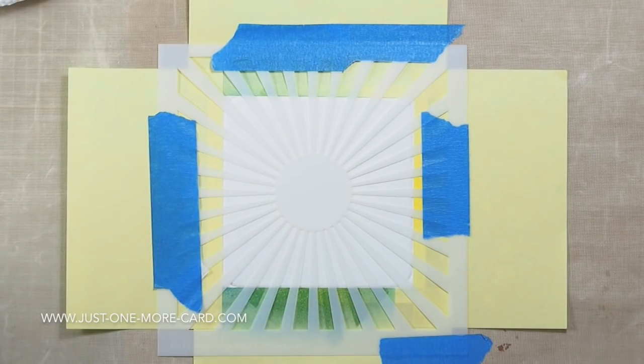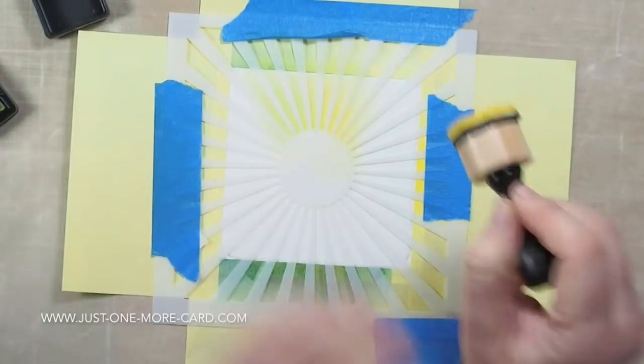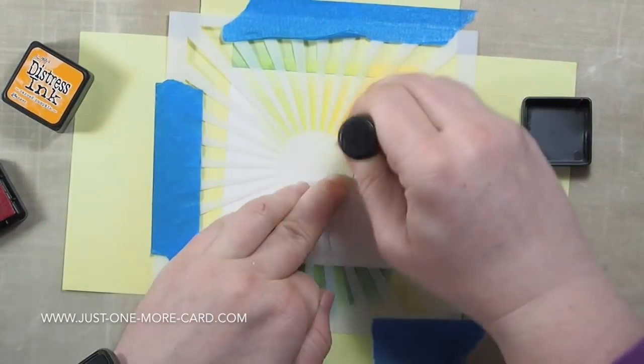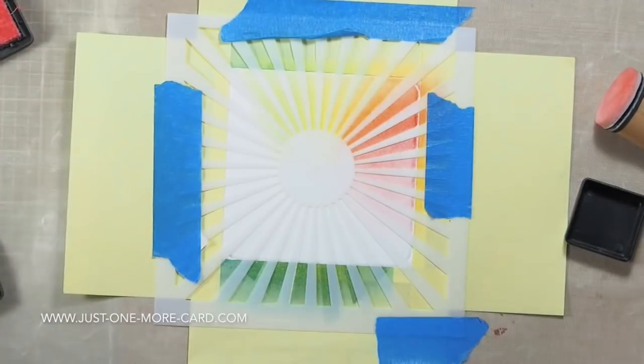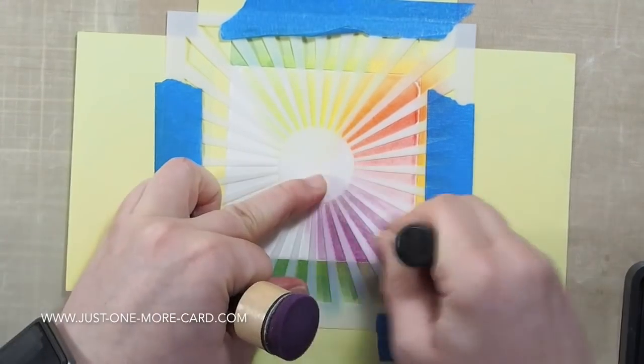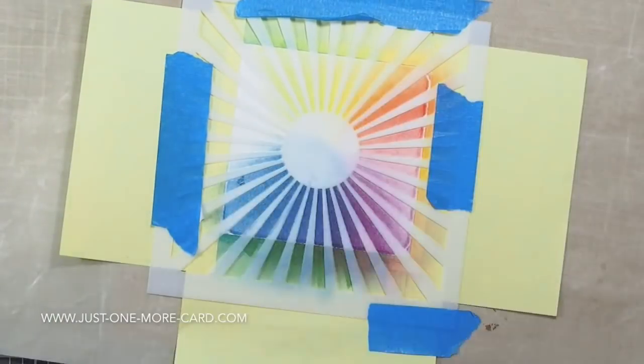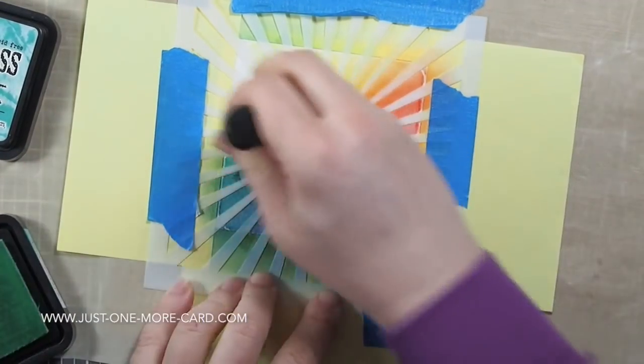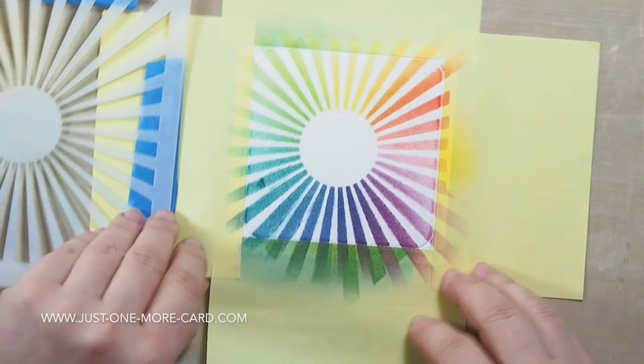I used some post-it notes to mask off parts of the card base along the frame that I had just embossed, and then I used distress inks to create my rainbow effect. If you don't have lots of colors of distress ink, remember they are basically watercolors and they are meant to be mixed. If you mix different colors together, especially those which are next to each other in the color wheel, you can create a third color. Don't panic if you don't have all the colors, you can really just mix most of them.